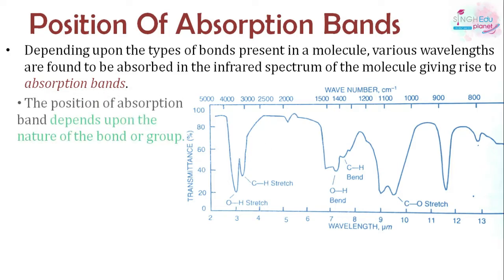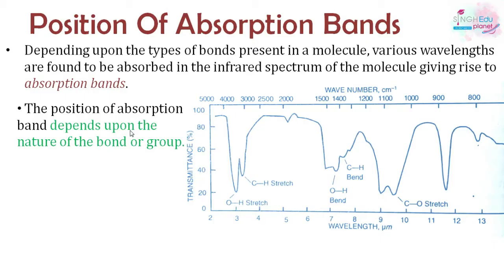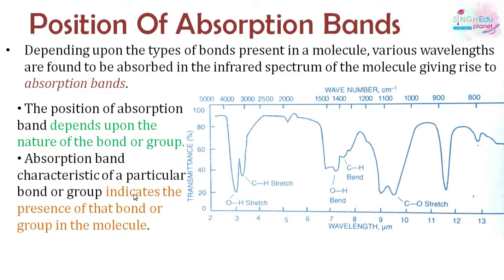The position of absorption bands depends on the nature of bonds. If an absorption band is present, we can determine whether a particular bond is present in a molecule or not. For example, in ethanol (CH₃CH₂OH), a C-H bond gives C-H stretching and C-H bending bands, and an O-H bond gives O-H stretching and bending bands. This tells us which bonds are present in the molecule.